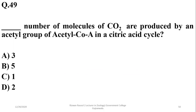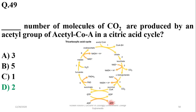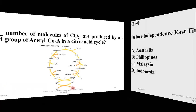Question 49: The number of CO₂ molecules produced by the acetyl group of acetyl coenzyme A in the citric acid cycle is two. So D is the right option. The two CO₂ molecules are released during the Krebs cycle when acetyl coenzyme A is incorporated.